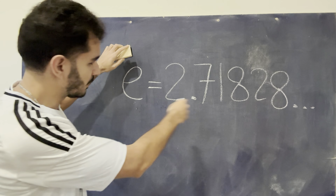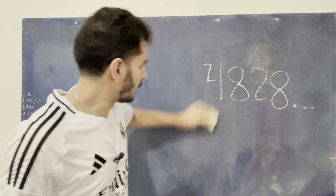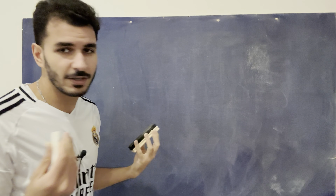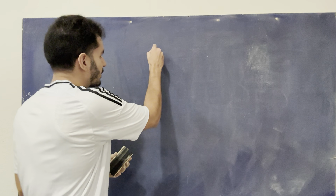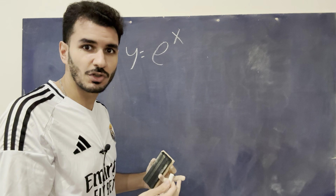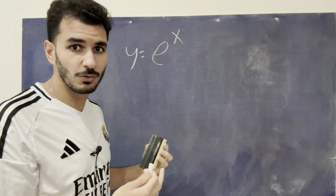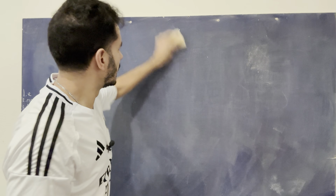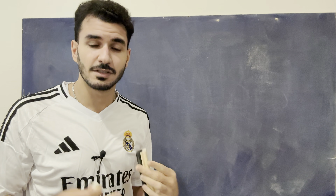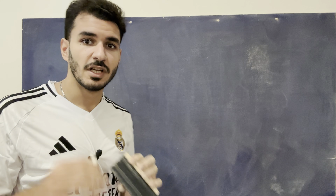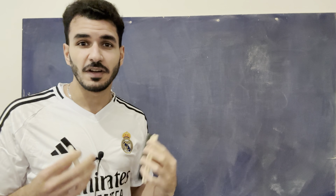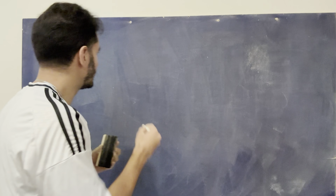Before I talk about this number E, where it comes from, and why it's equal to this value, I want to talk about something more important: exponential functions in general. E is something you usually see as E to the X, described as some type of exponential growth function. But what even are exponentials? Exponential functions are things that grow very, very fast — and they grow fast by a concept of compounding.